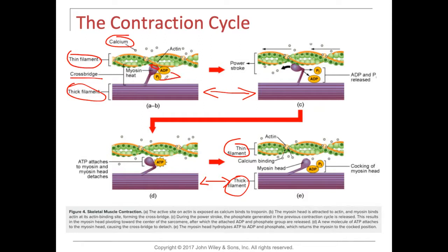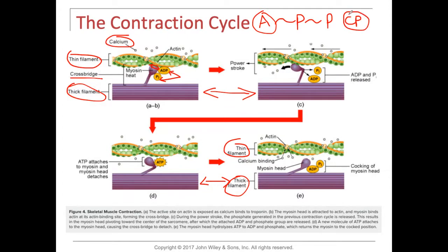Notice what we have hanging out here: we have ADP — adenosine with two phosphates attached. Right next to it is another phosphate, which is typically referred to as creatine phosphate. It's available energy that's ready to be used, just hanging out next to the ADP. Now, the hinge right here bent, and when that hinge bent, it created a power stroke, releasing that ADP and that phosphate.